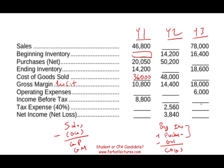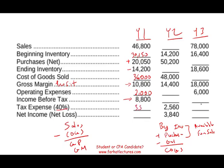Beginning inventory plus purchases minus ending inventory equals cost of goods sold. That intermediate total — beginning inventory plus purchases — is called goods available for sale. I don't know beginning inventory yet, but if I take X plus 20,050 minus 14,200, that gives me 36,000. Solving for X, beginning inventory must be 30,150. Now I have gross margin. I'm not given operating expenses, but income before expenses is 8,800, meaning I need to deduct 2,000 in operating expenses. With a 40% tax rate, I pay 3,520 in taxes, giving me net income of 5,280.